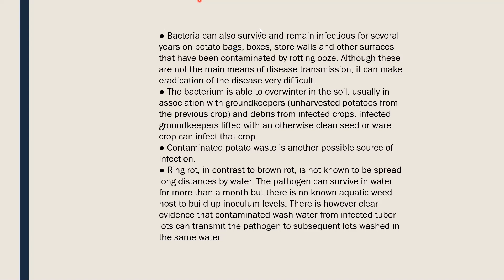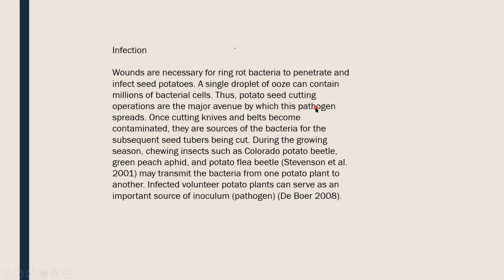There is clear evidence that contaminated wash water from infected tuber lots can transmit the pathogen to subsequent lots washed in the same water. Wounds are necessary for ring rot bacteria to penetrate and infect seed potatoes. A single droplet of bacterial ooze can contain millions of bacterial cells, as bacteria are very small in size.